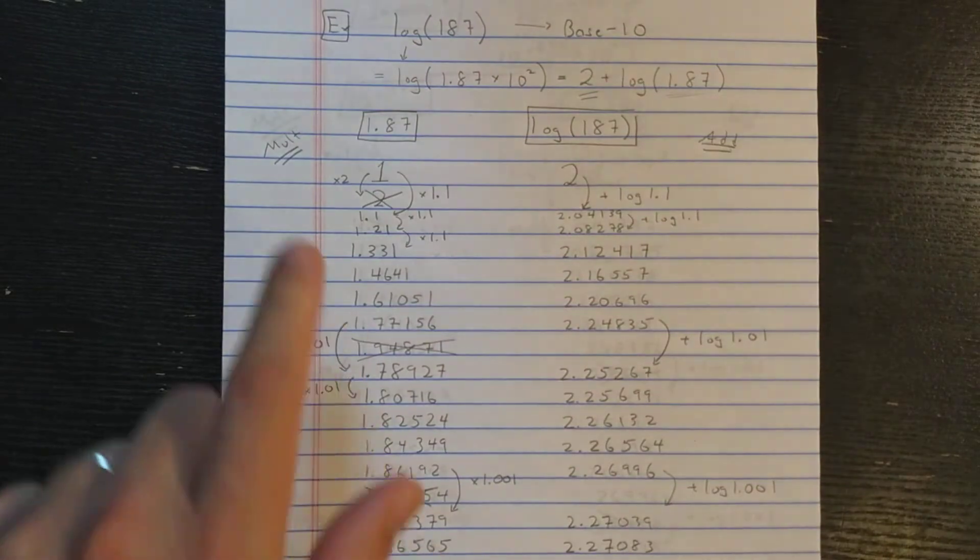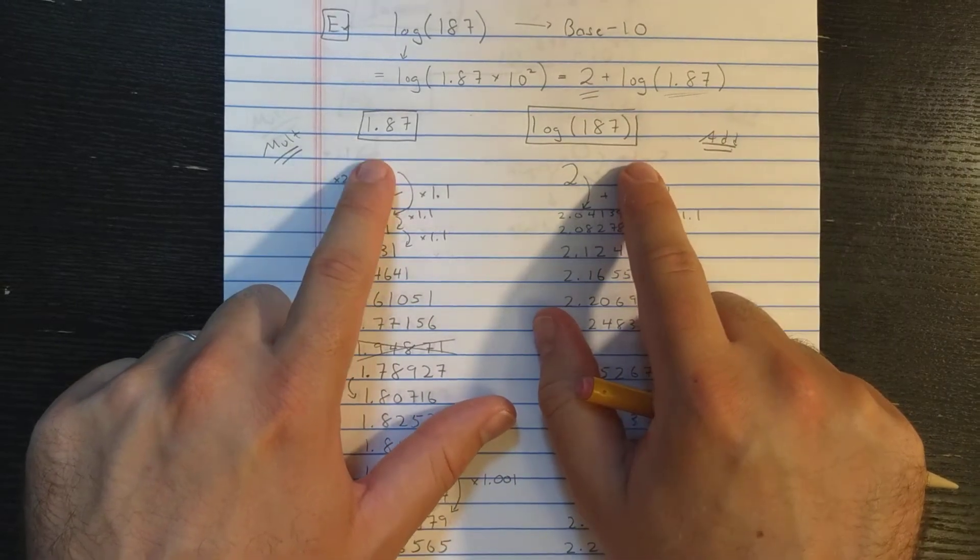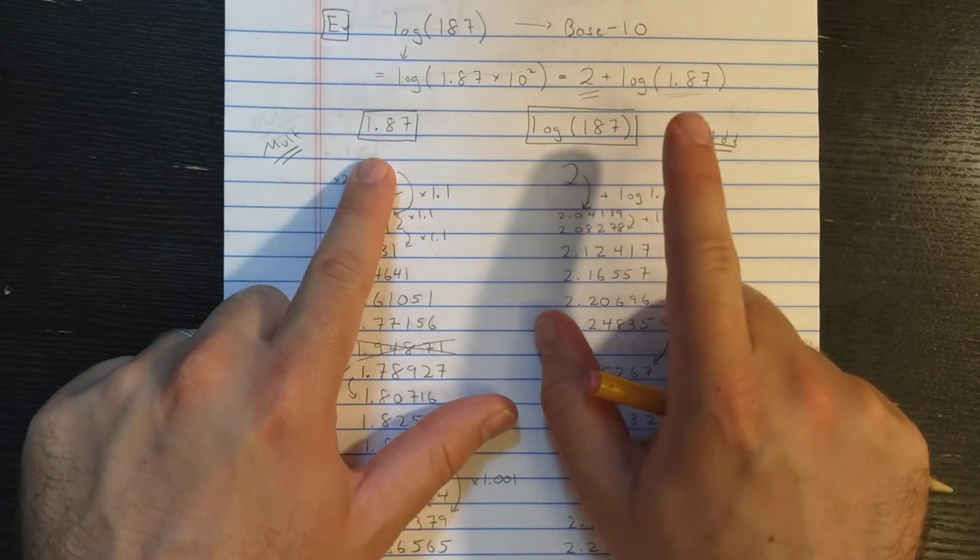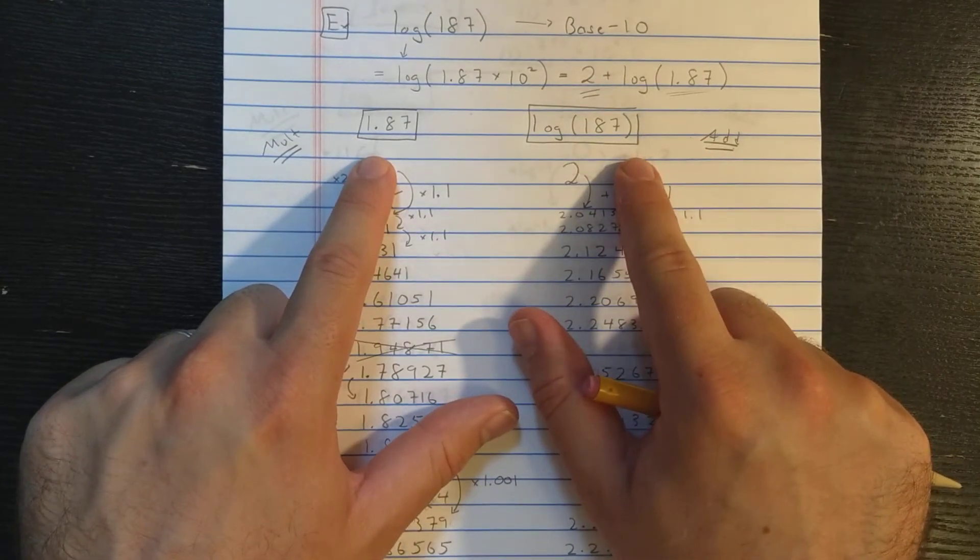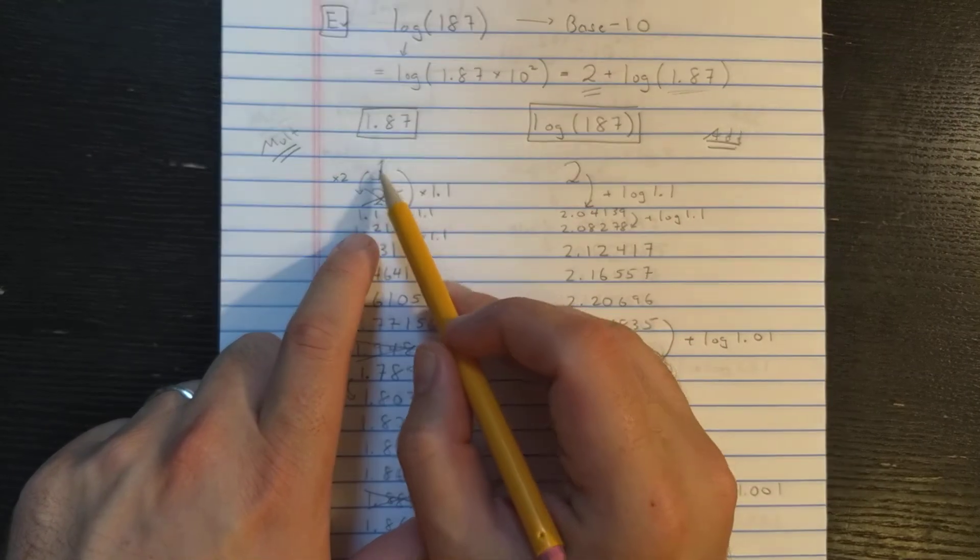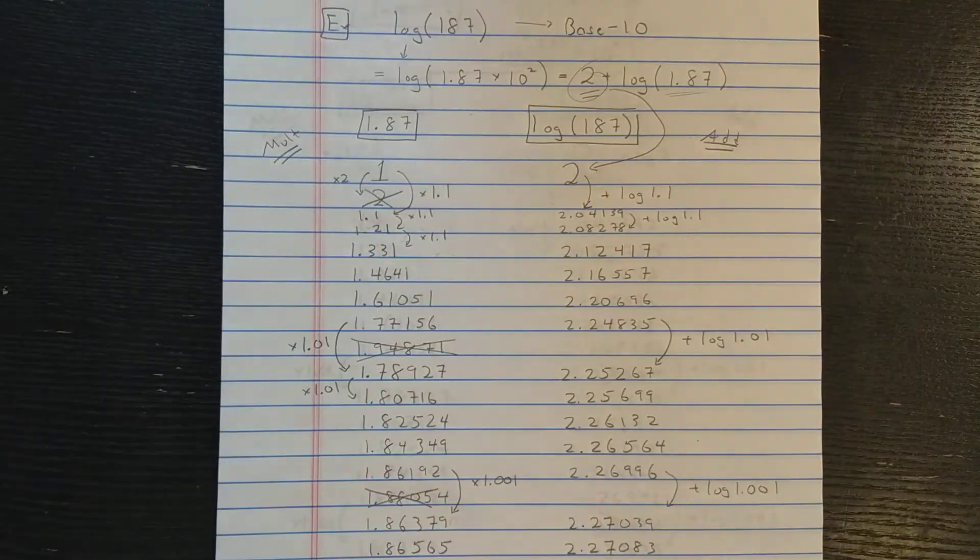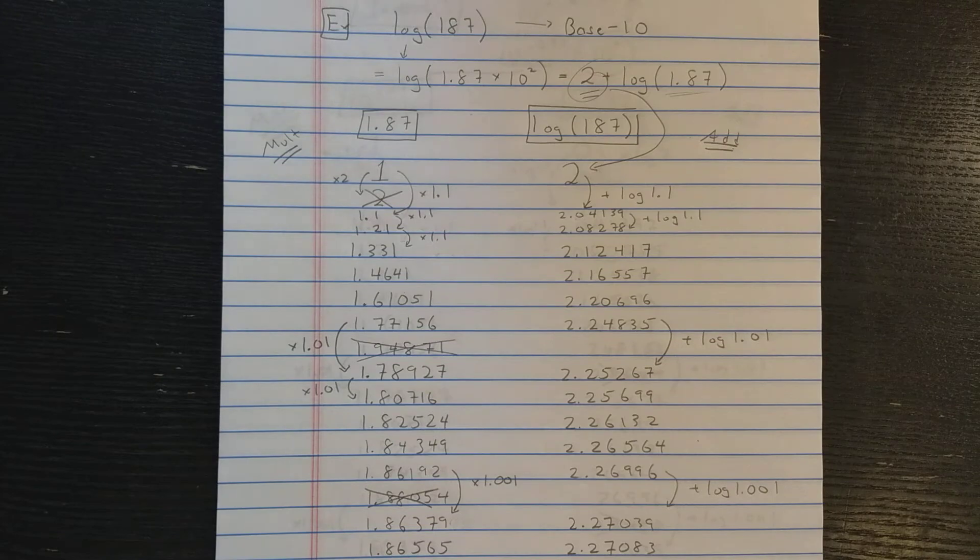I have two columns. In one column, I'm multiplying, and in the other column, I'm adding. This column is going to be approximating 1.87, and this column is going to be approximating the logarithm. So this column starts with a 1, this column starts with a 2 from that 2. So that 2 is used to start the logarithm column.